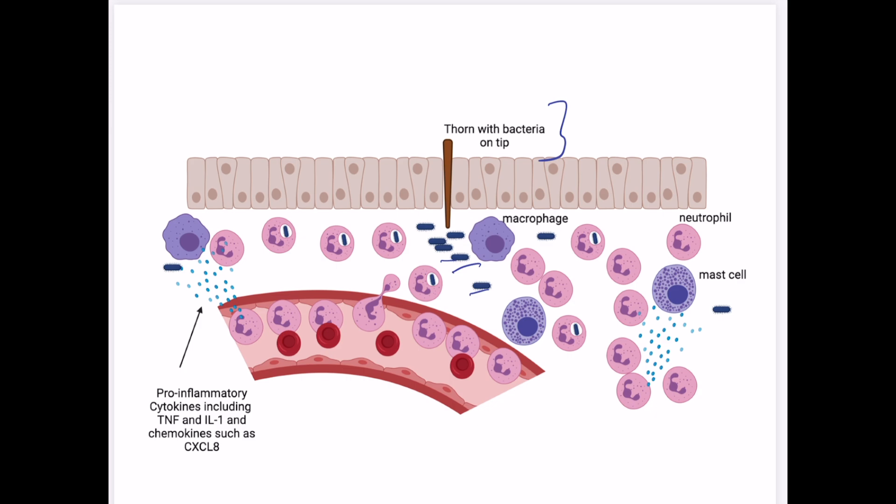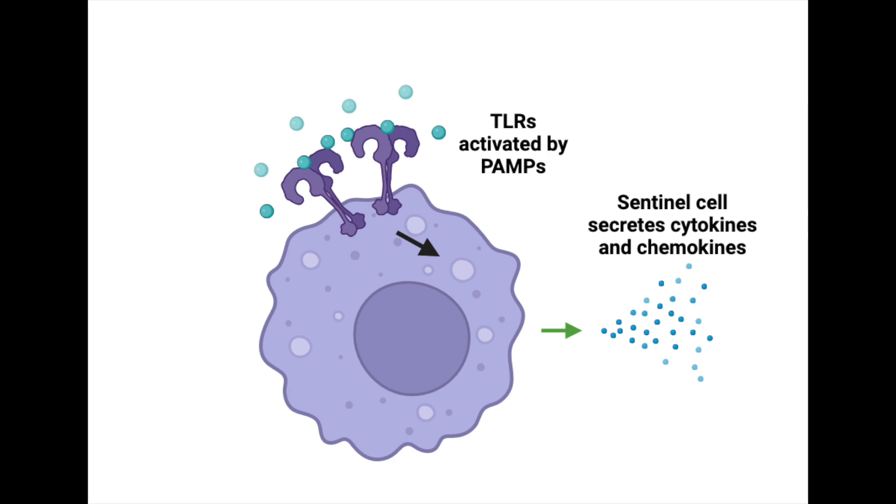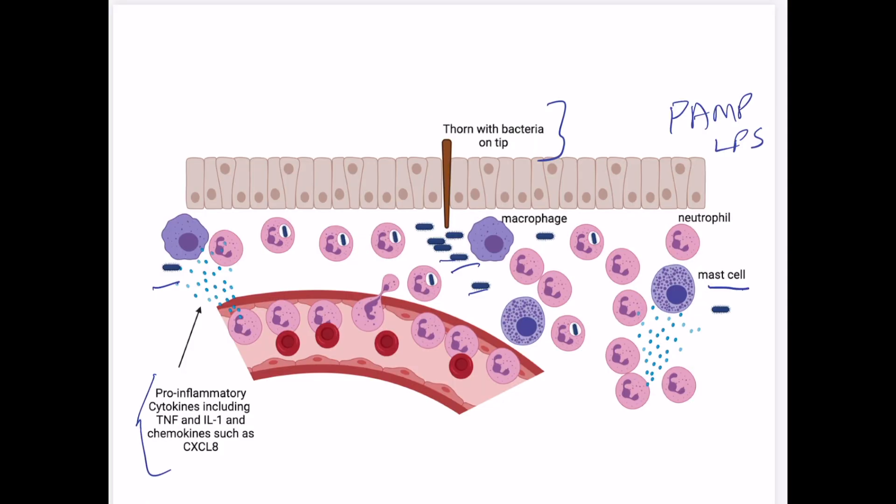So the sentinel cells like mast cells and macrophages have receptors. And these receptors respond to the pattern, the pathogen-associated molecular pattern or PAMP. So this PAMP was LPS in this case. And LPS triggered these sentinel cells to release cytokines and chemokines. We've mentioned here some pro-inflammatory cytokines like TNF and IL-1, and a chemokine called CXCL8. And so these cytokines and chemokines are going to drive the process of inflammation.